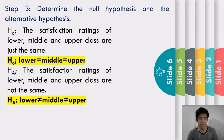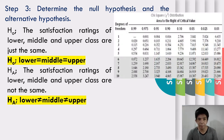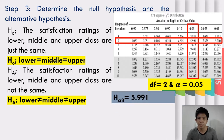Step 3: Determine the null hypothesis and alternative hypothesis. For the null hypothesis: the satisfaction ratings of lower, middle, and upper class are just the same. For the alternative hypothesis: the satisfaction ratings of lower, middle, and upper class are not the same. Using the chi-square distribution table with a degree of freedom of 2 and an alpha level of 0.05, we get a critical value of 5.991.